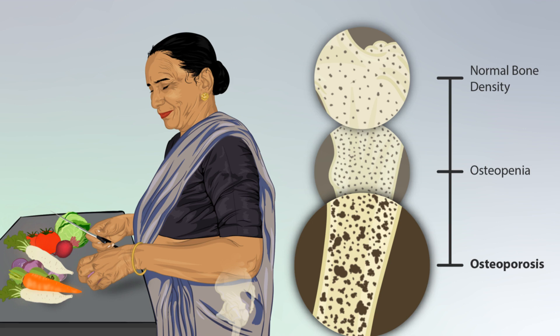Hi, Dr. Bruce here and welcome to this short topic video on osteoporosis. Osteoporosis and osteopenia are both characterized by bone loss. In order to understand the underlying process of osteoporosis and osteopenia, we need to review how blood calcium is managed.